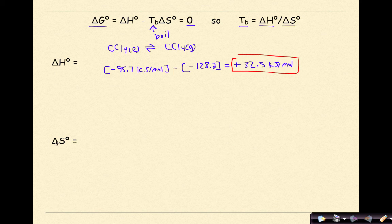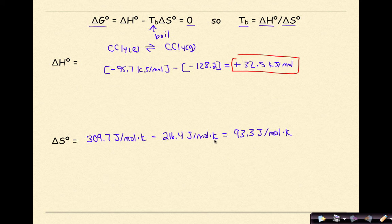So now what I'm going to do is I'm going to solve for delta S at the standard state. So I'm going to find the value for CCl4 liquid, and that is 309.7 joules per mole kelvin minus 216.4 joules per mole kelvin. And when I take the difference of those two, I'm going to get 93.3 joules per mole kelvin. Now the thing to realize here is that this 32.5 kilojoules per mole is in kilojoules, and this is in joules.